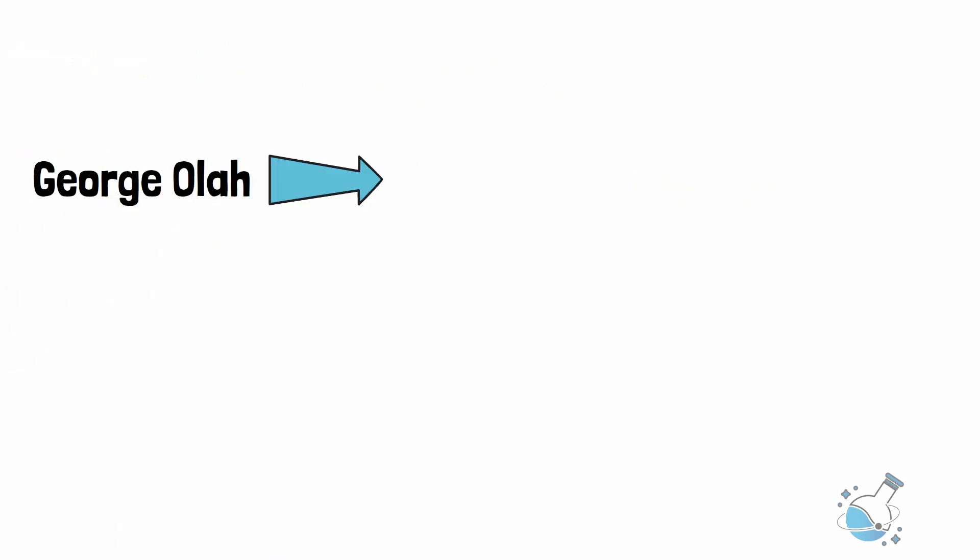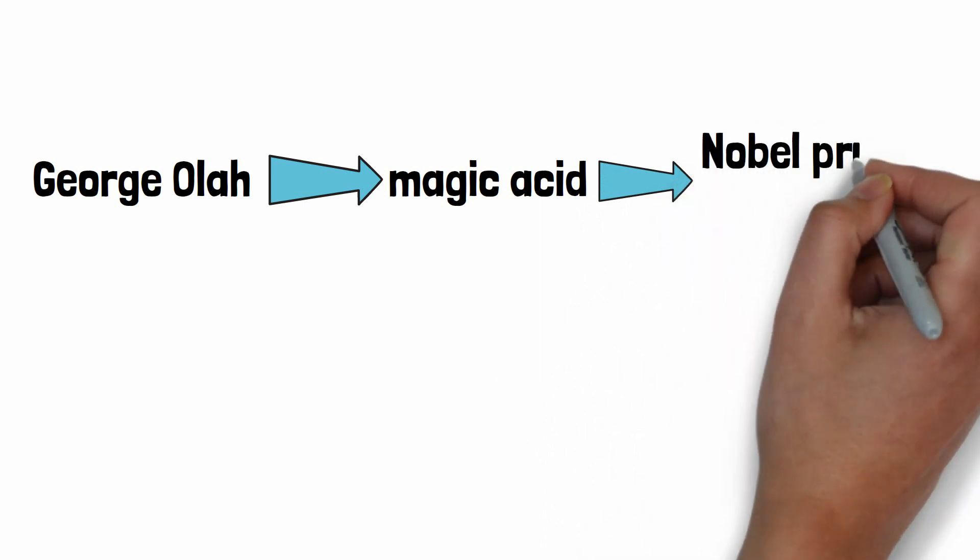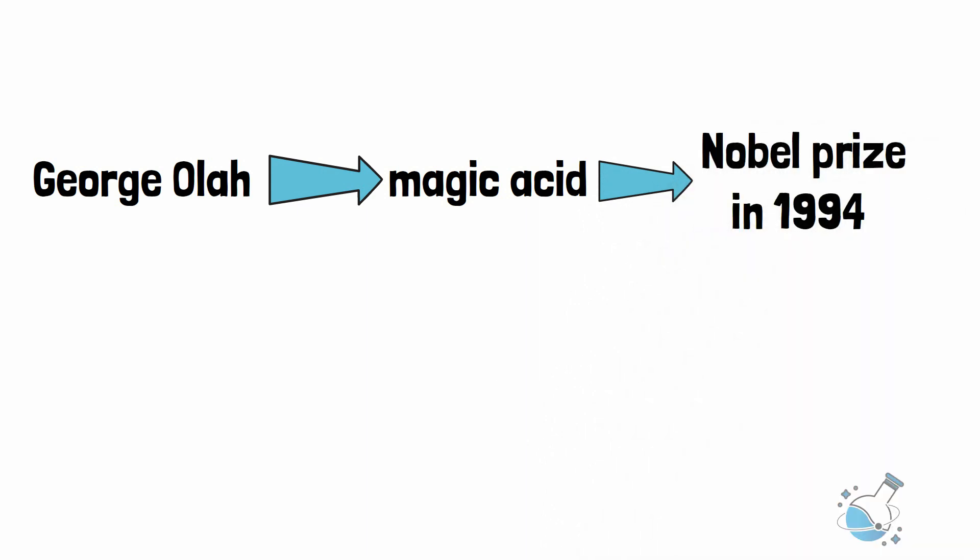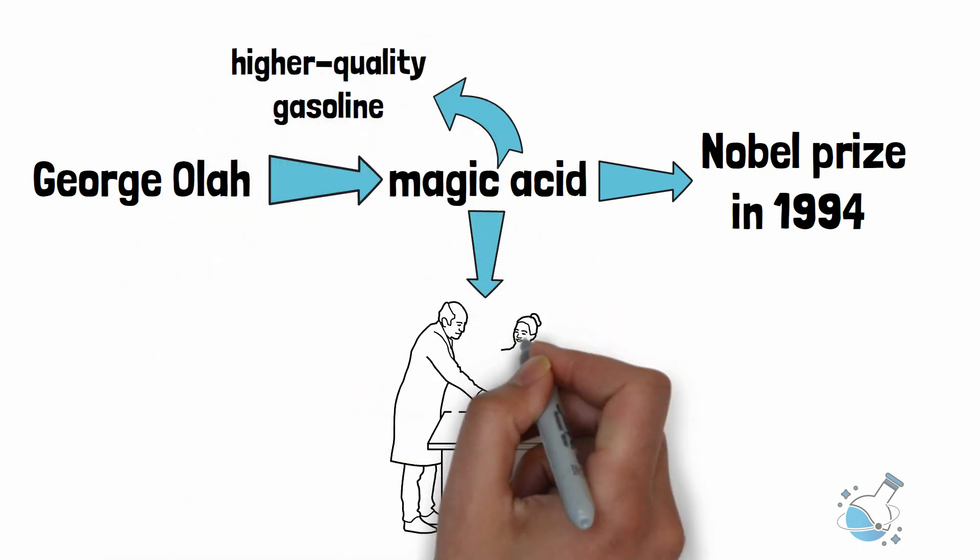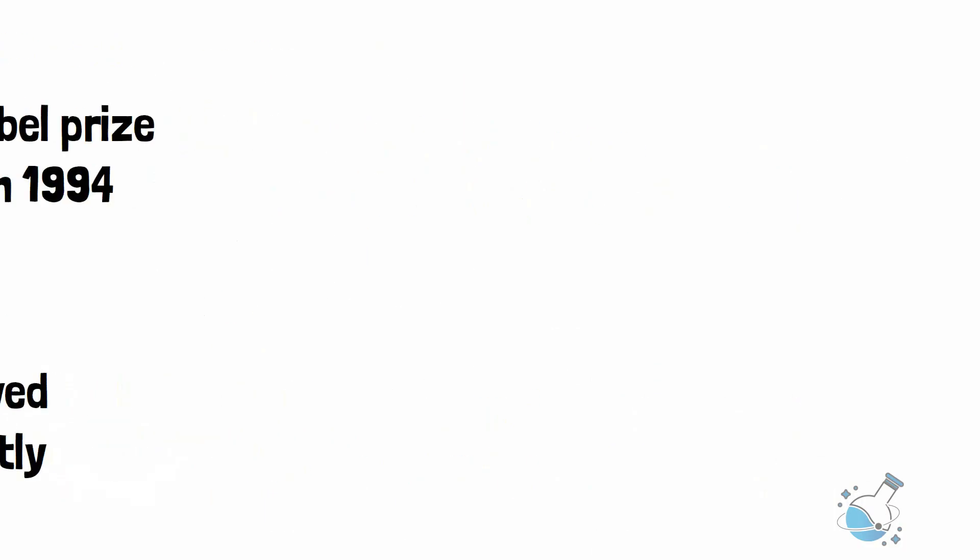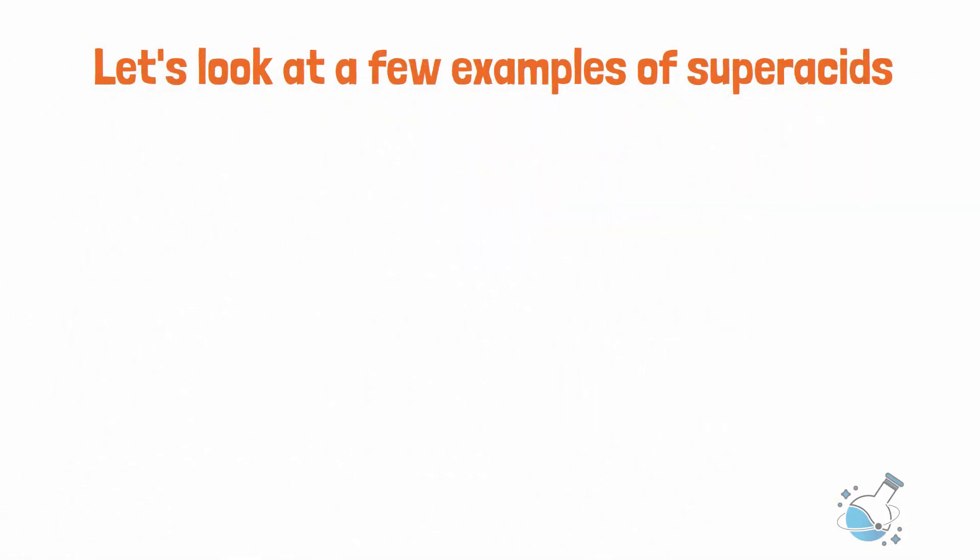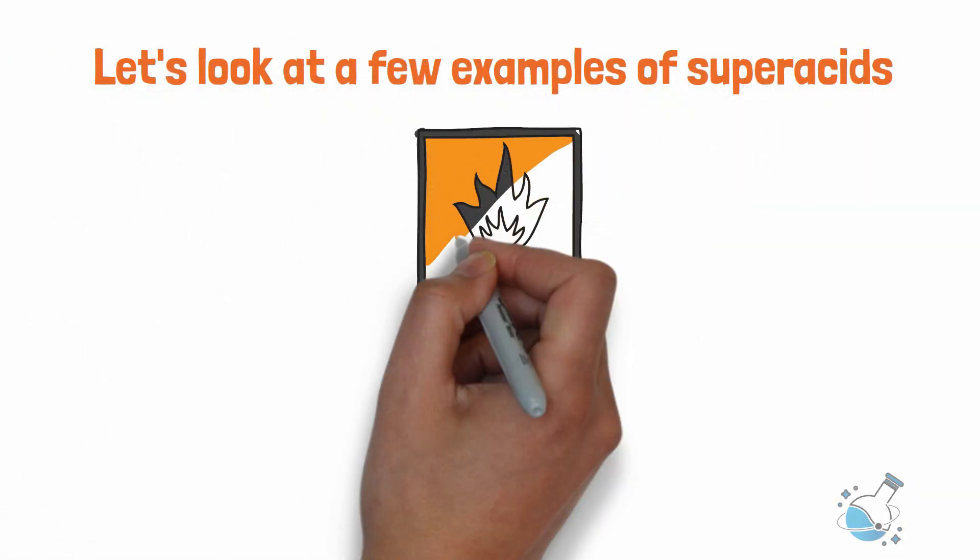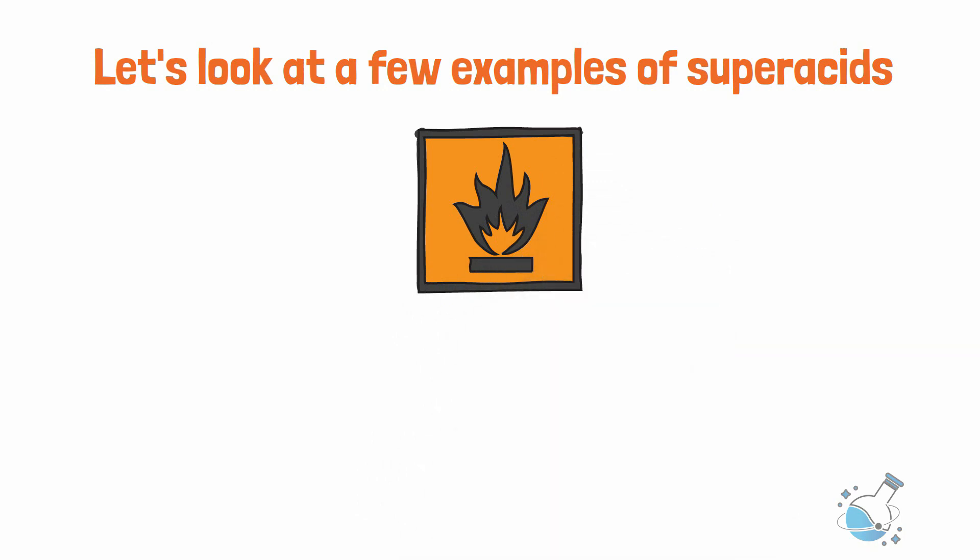George Olah has prepared a superacid called the magic acid. He won the Nobel Prize in 1994 for his works in carbocations. It is now used to produce higher quality gasoline from crude fuels. The name magic acid came up when chemists placed a paraffin candle in a sample of magic acid after a Christmas party. And it was dissolved instantly. Let's look at a few examples of superacids and how dangerous they are. After all, that is what we all are after.